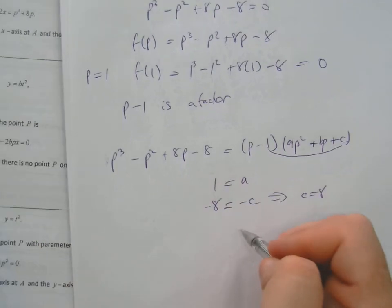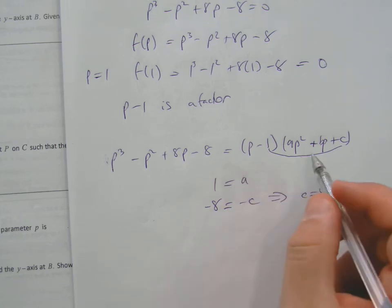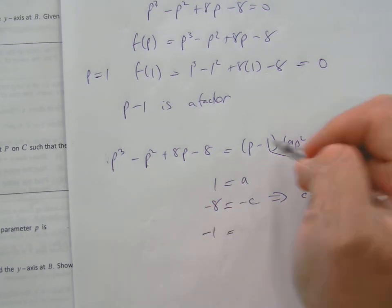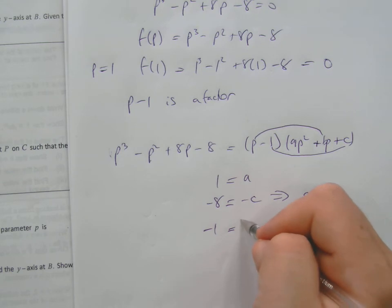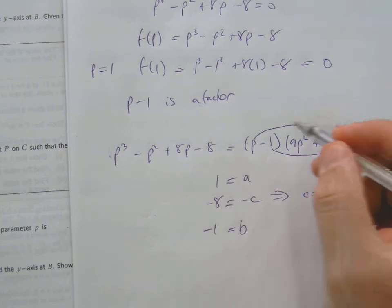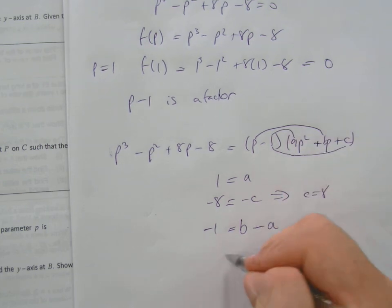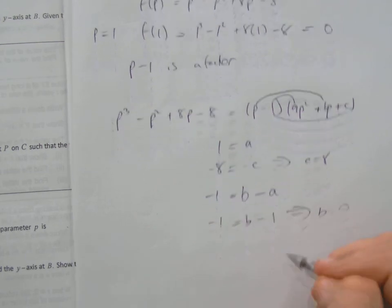To get p squared from here, it'll be p times B, which is PB, and then we do this as well to get the other p squared, minus A. So minus 1 equals B minus 1. Oh that's nice, that means B is 0. That's really nice.